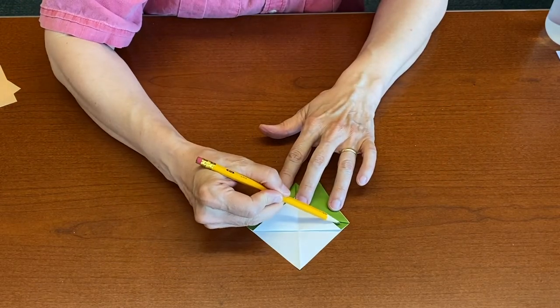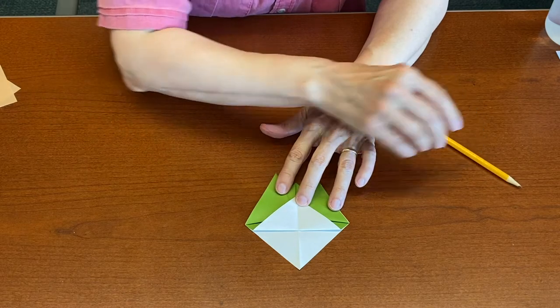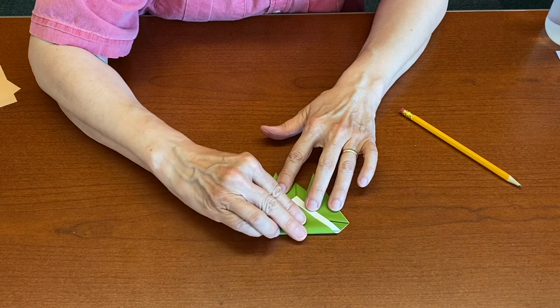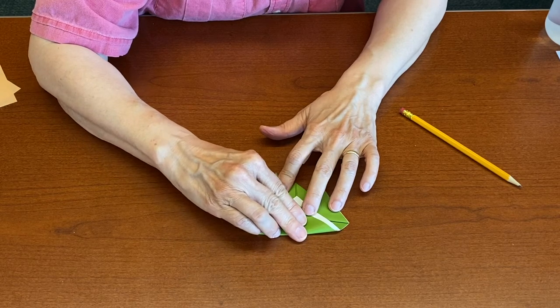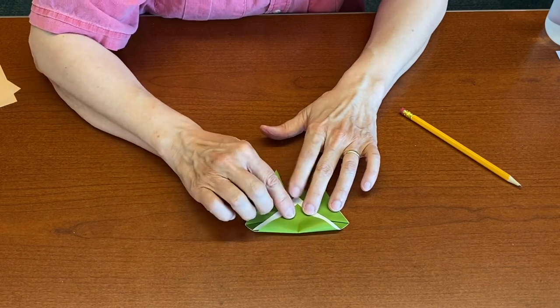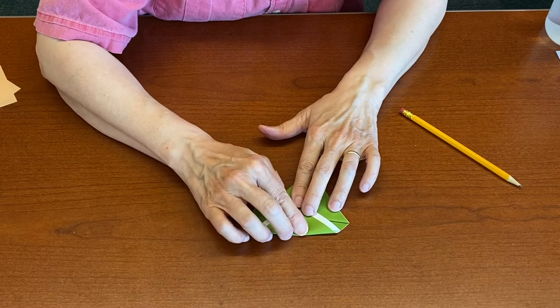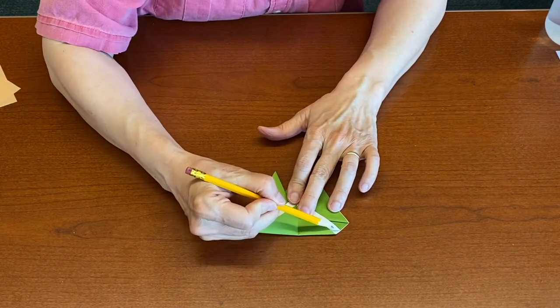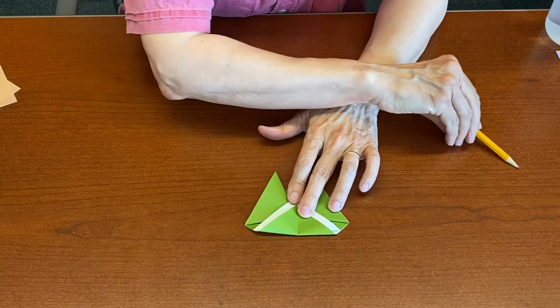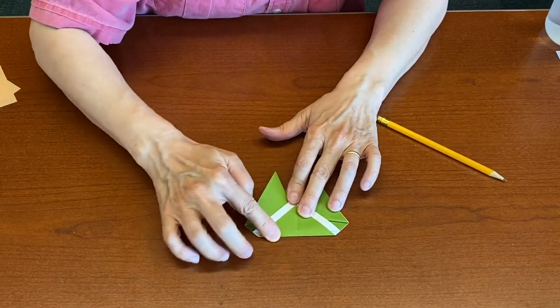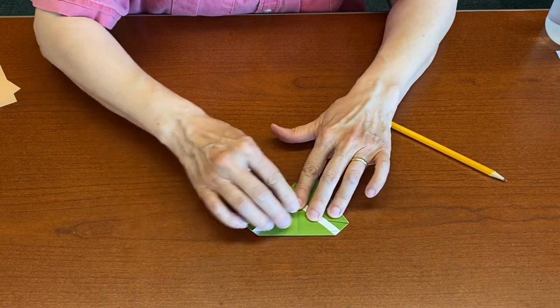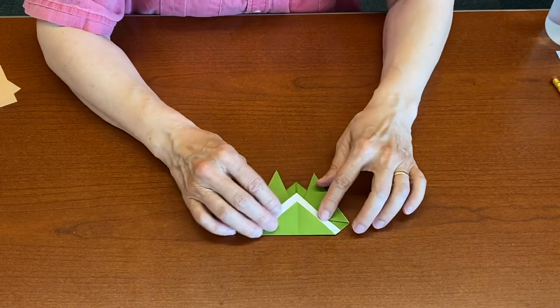And there's the space that you left, the gap. Now pick up the other layer, the bottom layer, and bring it up. And again, keeping the point on the center line, you're not going to pull it all the way up as far as it goes. Again, you're going to leave a gap there. And that's what creates the colorful band that makes the cicada very distinctive looking.